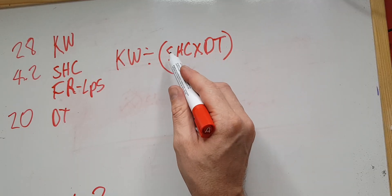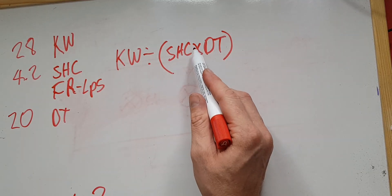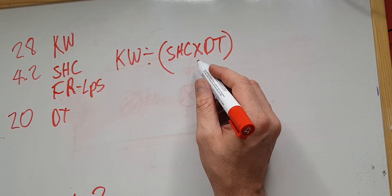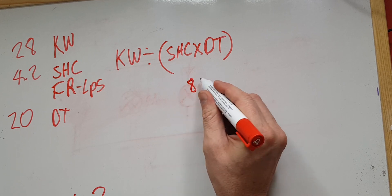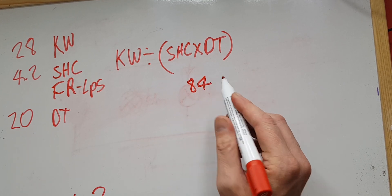So specific heat capacity times delta T: delta T 20 times 4.2 is 84. If you just remember this number, you're going to make your whole life so much easier. You can be on site or anywhere — just know that number and you can have an answer like that.